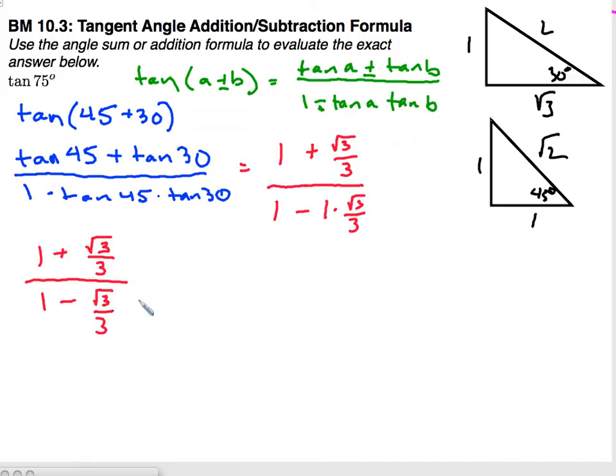Now a couple of ways to handle this as far as simplifying. I can't have the square root on the bottom. So what I'm going to do, I'm going to multiply the top and bottom by 3. And what this will do, we'll eliminate that 3 in the denominator and turn this from a complex fraction to a regular fraction of 3 plus the square root of 3 over 3 minus the square root of 3.